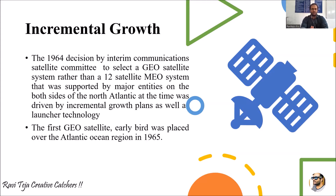Instead of using 12 satellites at the Medium Earth Orbit (MEO), which are neither too near nor too far from Earth, a GEO satellite was considered. We have three orbital states: LEO, which is very near to the Earth; MEO, which is a middle distance; and GEO, which is very far away. Satellites in GEO can cover most portions of the Earth.